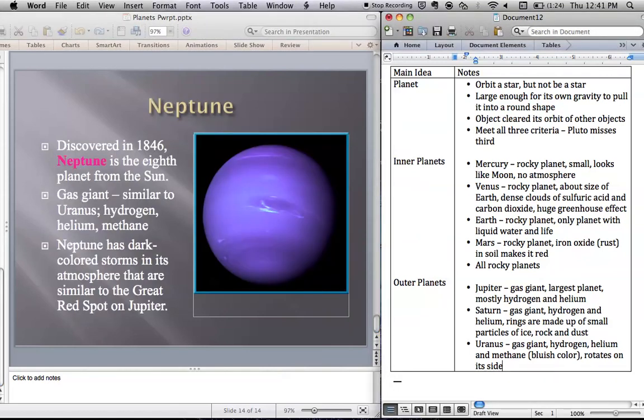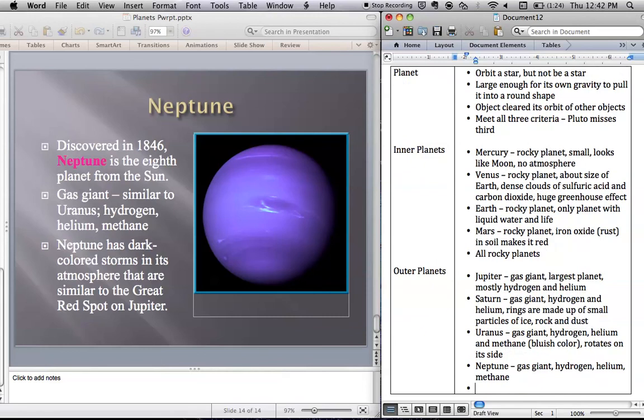And then our last planet, farthest from the sun, is Neptune. It's another gas giant. Again, hydrogen, helium, and methane. So it's kind of purplish in color. And it's the eighth planet from the sun. And we didn't reach this until almost the 1990s with a spacecraft that had been launched in the 1970s. That kind of gives you an idea of how far away Neptune is. So if you notice, all of the outer planets, one thing they have in common, they are all gas giants.